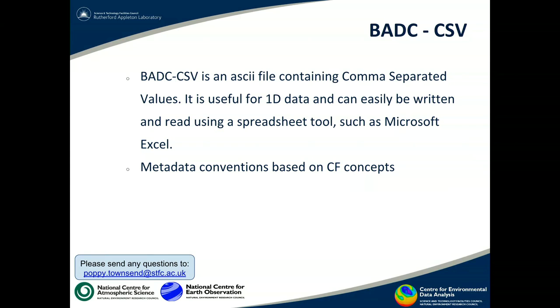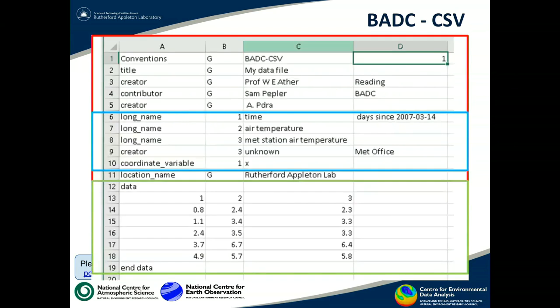The metadata conventions for BADC CSV files are in fact based on the CF concepts that we've just looked at. And here's an example of what you might see inside one of the files. So this is displayed as you would see it in a spreadsheet. So the first thing to note is that obviously there are coloured boxes here. So the red and the blue boxes at the top are delineating the metadata that go inside this file. And the green box at the bottom shows the data values themselves.